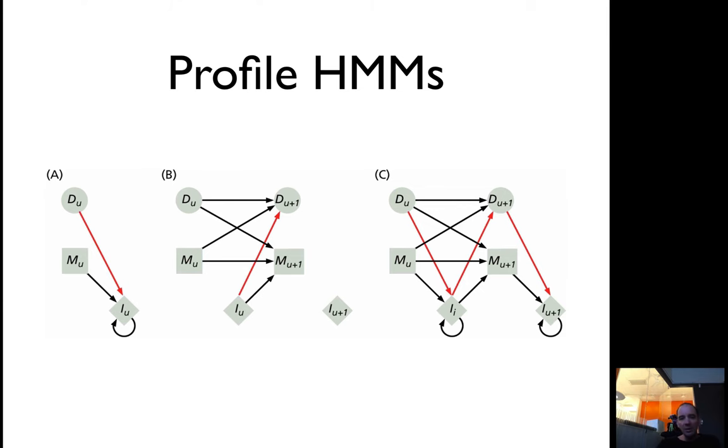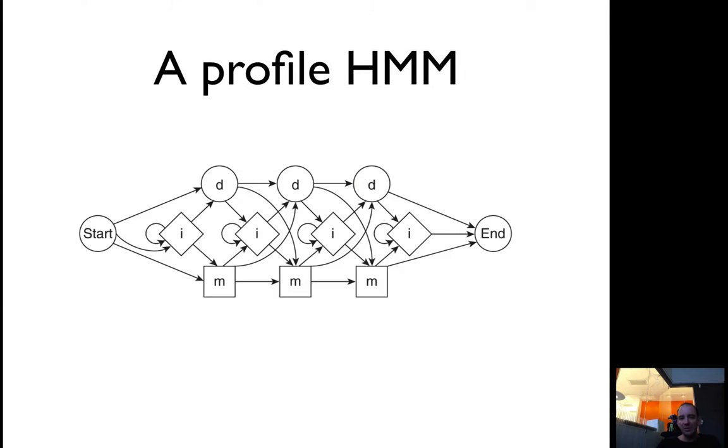By having different states, you have a start state and you can take a sequence and align it to what you call the profile Hidden Markov Model. You have match states, insert states, and delete states. In the match state, you align your sequence to that position in the Hidden Markov Model. You can have an insertion, which means your sequence is longer. Or you can delete states—you skip and go into delete states, skip a few steps in your match state and go further on.